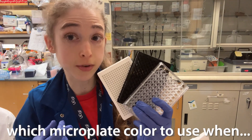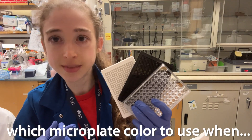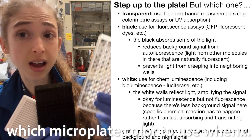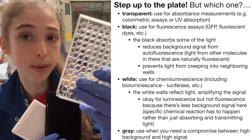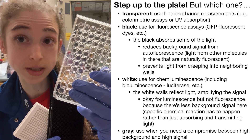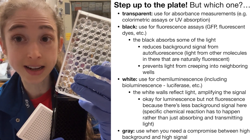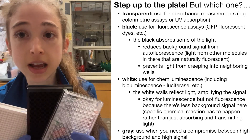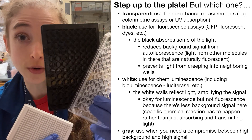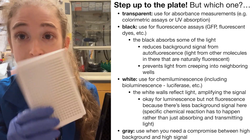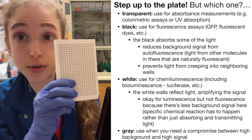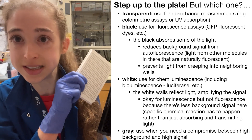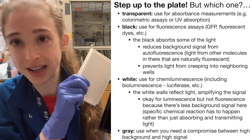It's time to step up to the microplate for your measurements. How do you know which color to use? Bottom line: use clear transparent ones for absorbance measurements — things like colorimetric or color-based readouts. Use black for fluorescence, and white for other forms of luminescence like chemiluminescence and bioluminescence.